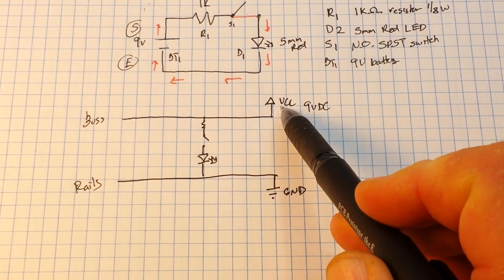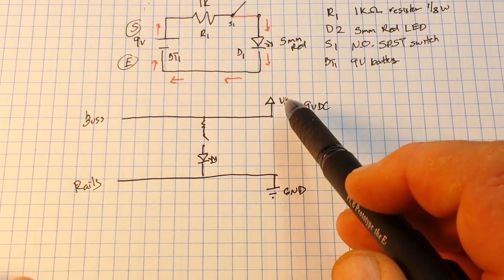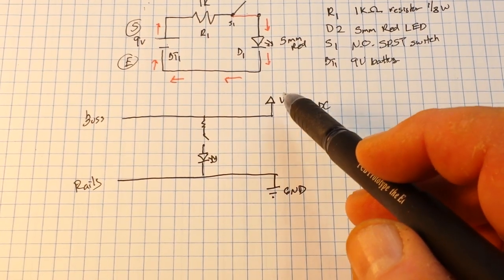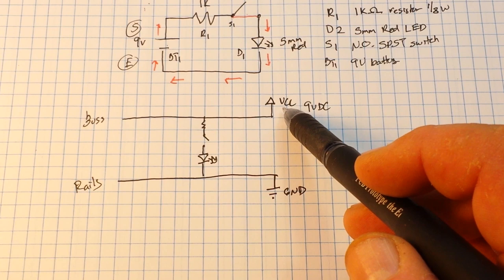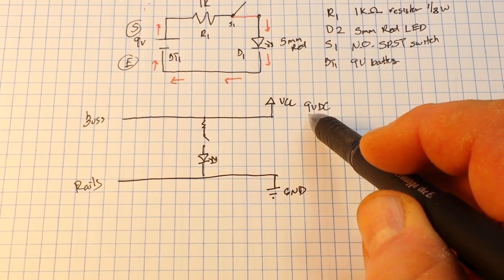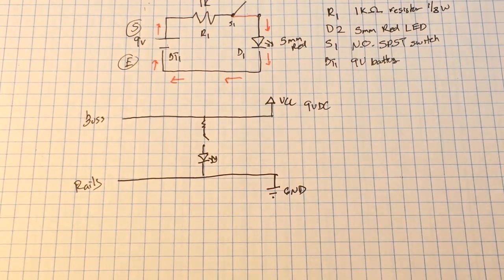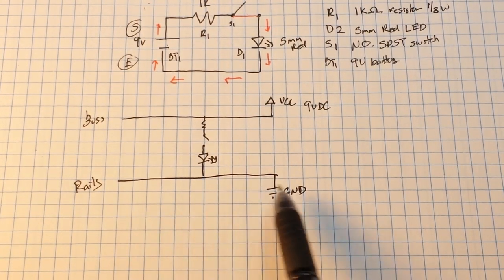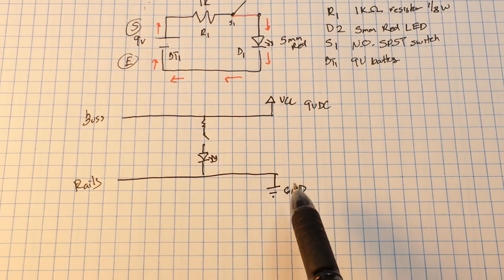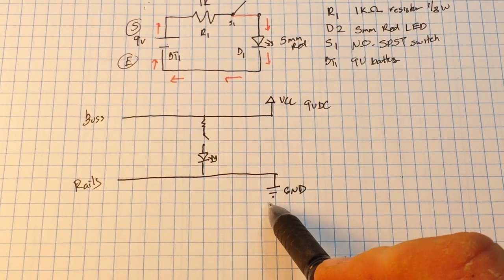So we have two rails, one at the top, one at the bottom. The top rail is our VCC, which is not really the correct terminology but that is what is usually listed. VCC stands for voltage of the collector, and in this case it is our 9 volt DC.